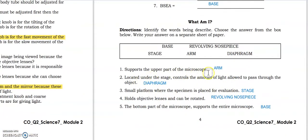And for the What Am I? Supports the upper part of the microscope, it's arm. Located under the stage, controls the amount of light allowed to pass through the object, it's the diaphragm. And the small platform where the specimen is placed for evaluation, that's stage. And holds objective lenses and can be rotated, we call it revolving nosepiece. And the bottom part of the microscope, supports the entire microscope, it's the base.